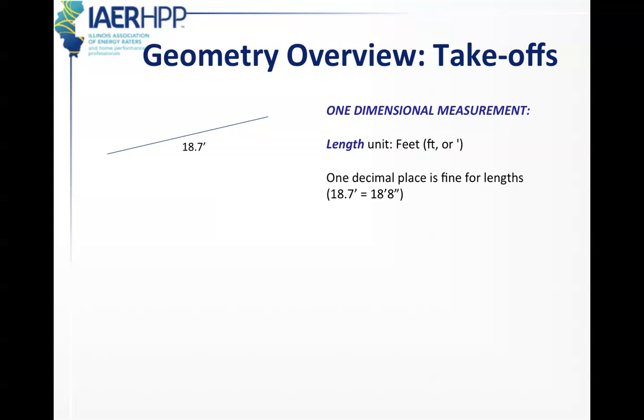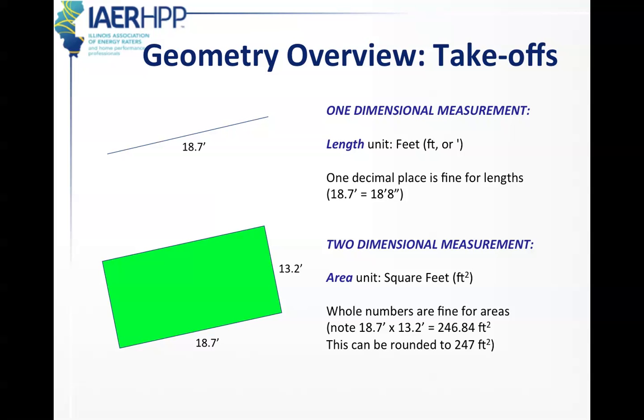First thing that we need to review is one dimensional measurements. This is just a line, let's say 18.7 feet long. We don't work in feet and inches. For the DET verifier, you're going to work in feet with decimal places after it. Two dimensional measurements are measured in square feet, which is ft², with a number 2 after it.